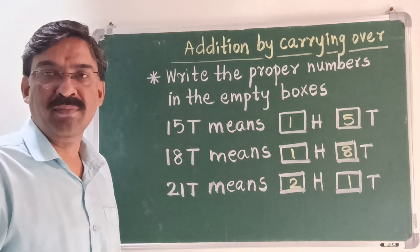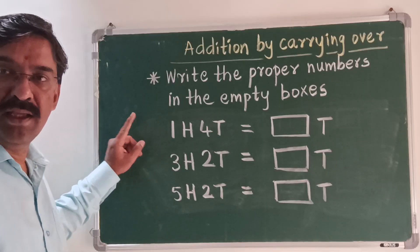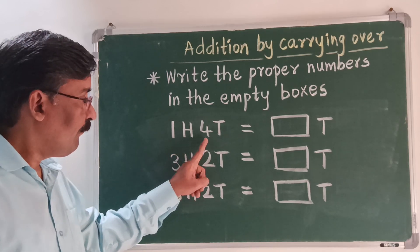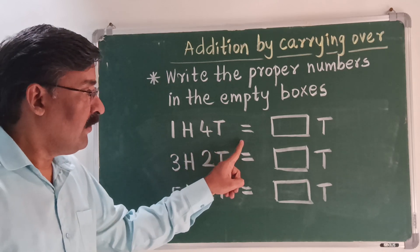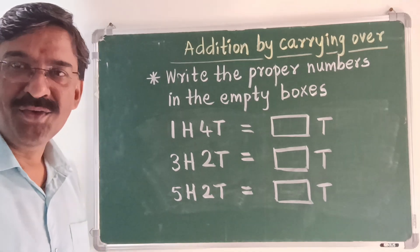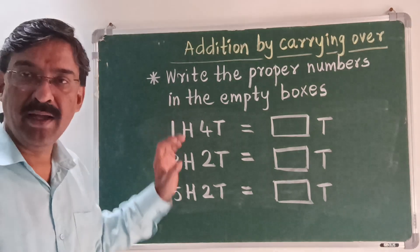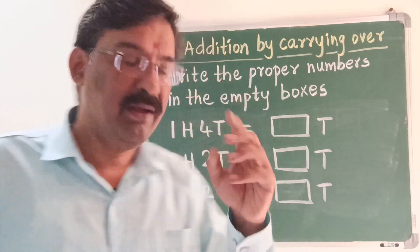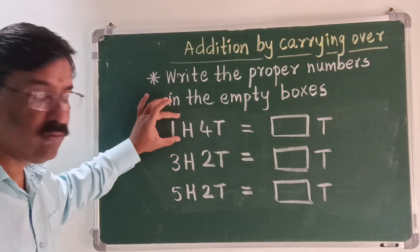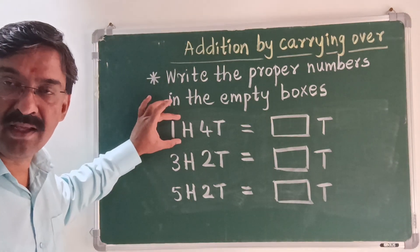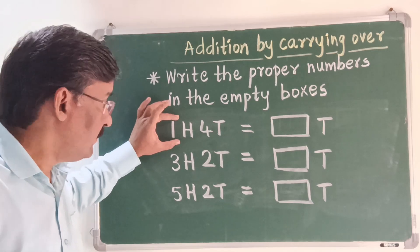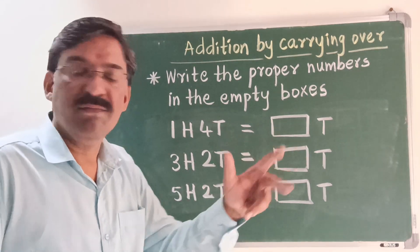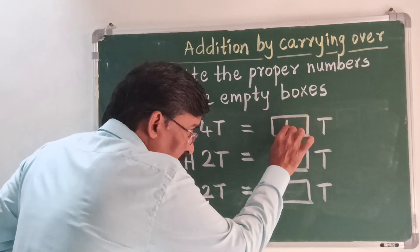Now let us see the next question. 100 plus 4 tens is equal to dash tens. We know very well that 100 means there are 10 tens — 10 tens make 100. So 100 you have to consider as 10 tens. 10 plus 4 tens: 11, 12, 13, 14 — so it will be 14 tens.